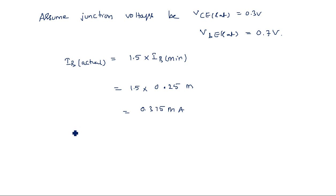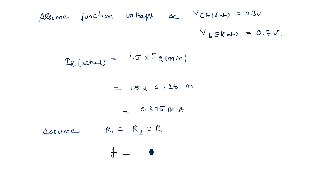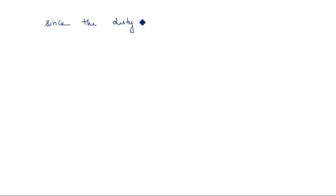Suppose when Q1 conducts and Q2 is off, Q1 is in saturation properly. Assume R1 = R2 = R. Frequency f is given as 1 kilohertz, so the time period T = 1/f = 1 millisecond.